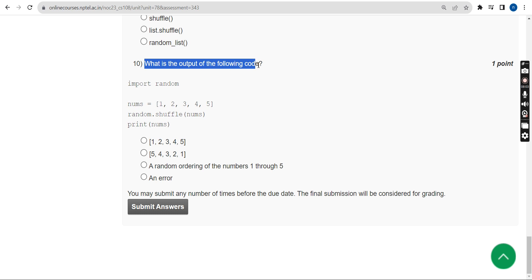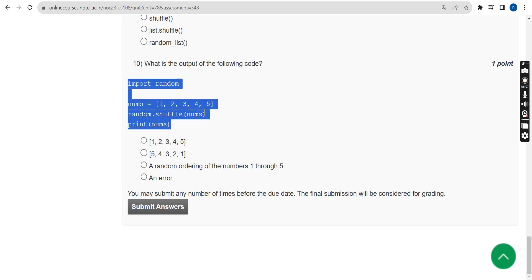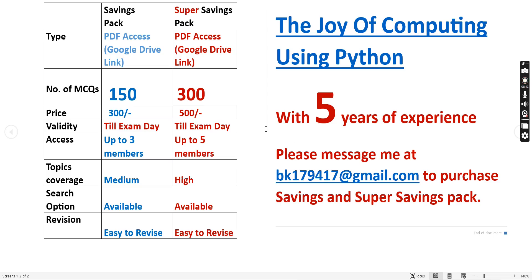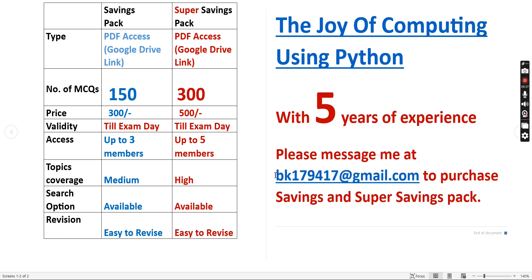Tenth question: What is the output of the following code? They have given a four-line code and are asking the output. We also provide MCQs — 300 MCQs for 500 rupees, up to five members can share, valid till exam day, with high topic coverage and search option. Email me at the address in the description if you want to purchase.